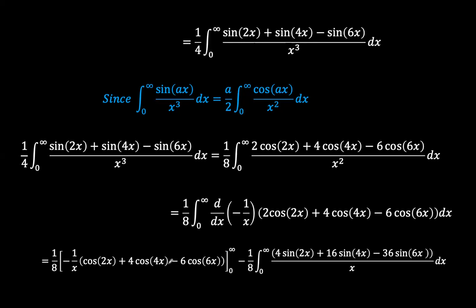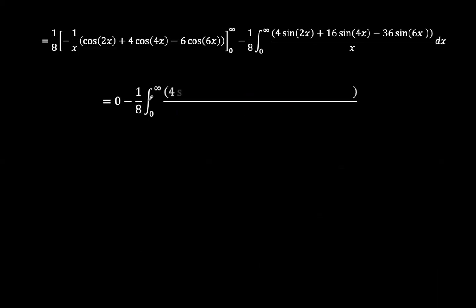At the upper limit when x tends to infinity, the boundary term tends to 0. At the lower limit when x equals 0, cosine of 0 is 1, so we have 2 plus 4 minus 6, which is 0. So the entire boundary component goes to 0. We are left with 0 minus 1 over 8 times the integral of 4·sin(2x) plus 16·sin(4x) minus 36·sin(6x).